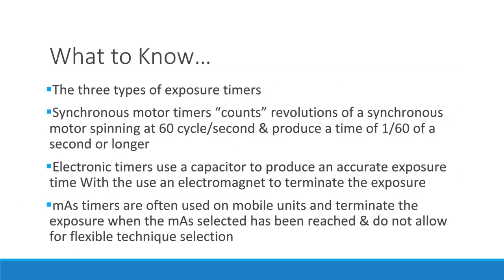You should be familiar with the three types of manual exposure timers. The synchronous motor timer counts the number of turns of a synchronous motor spinning at 60 cycles per second, and is able to produce an exposure time of 1/60th of a second or longer. The electronic timer is the most common timer — it sets a certain amount of charge to be allowed to be built up on a capacitor.